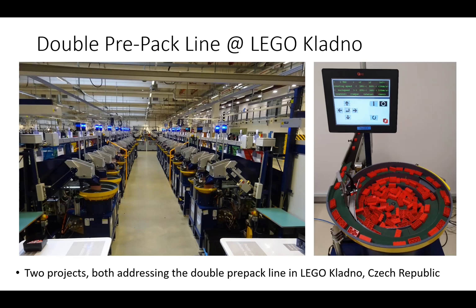The production line consists of 36 counting machines, which calculate the required number of pieces dosed into the bag. To clarify terminology: if you buy a Lego box, the paper box is called the box, and inside are the small plastic bags called pre-packs. The scope is how to improve this pre-packing process, how to better automate it, and make the entire packing process more efficient and smooth.